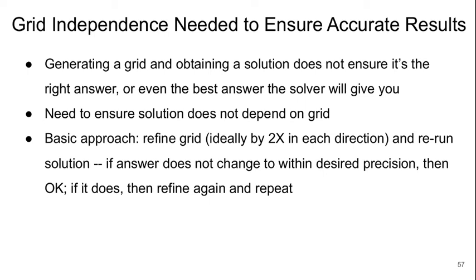If we want accurate results, we need to make sure our result is not dependent on our choice of computational grid. Just generating a grid and getting a solution does not ensure it's the right answer or even the best answer the solver will give you. The basic approach is to refine the grid, ideally by a factor of 2 in every direction, and then rerun the solution. If the answer doesn't change to within the desired precision, it's okay; if it does, we have to refine again and repeat.